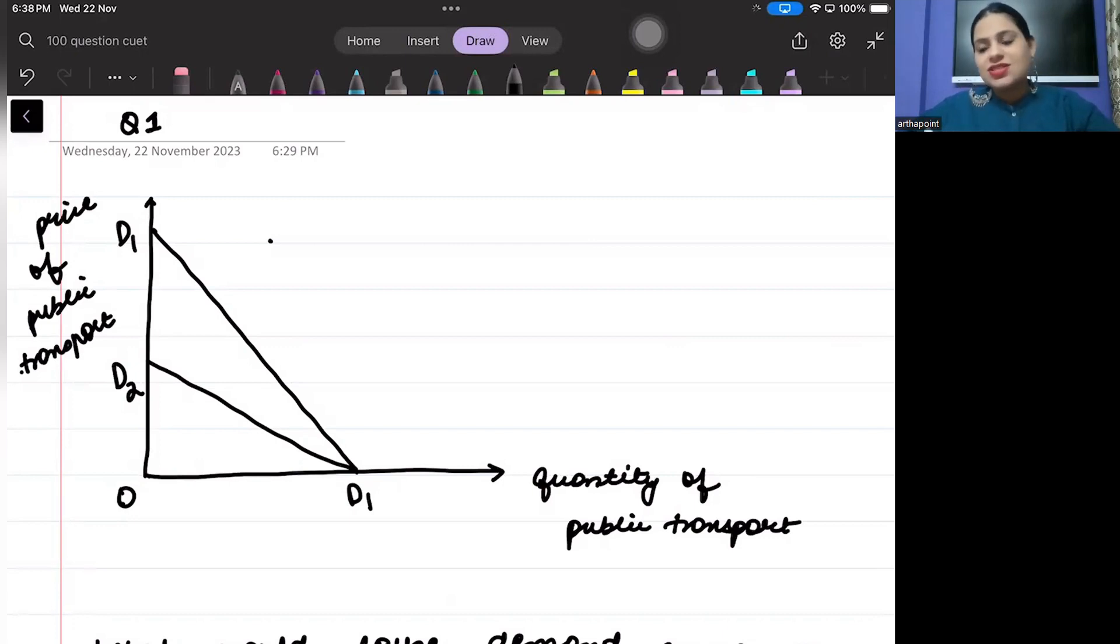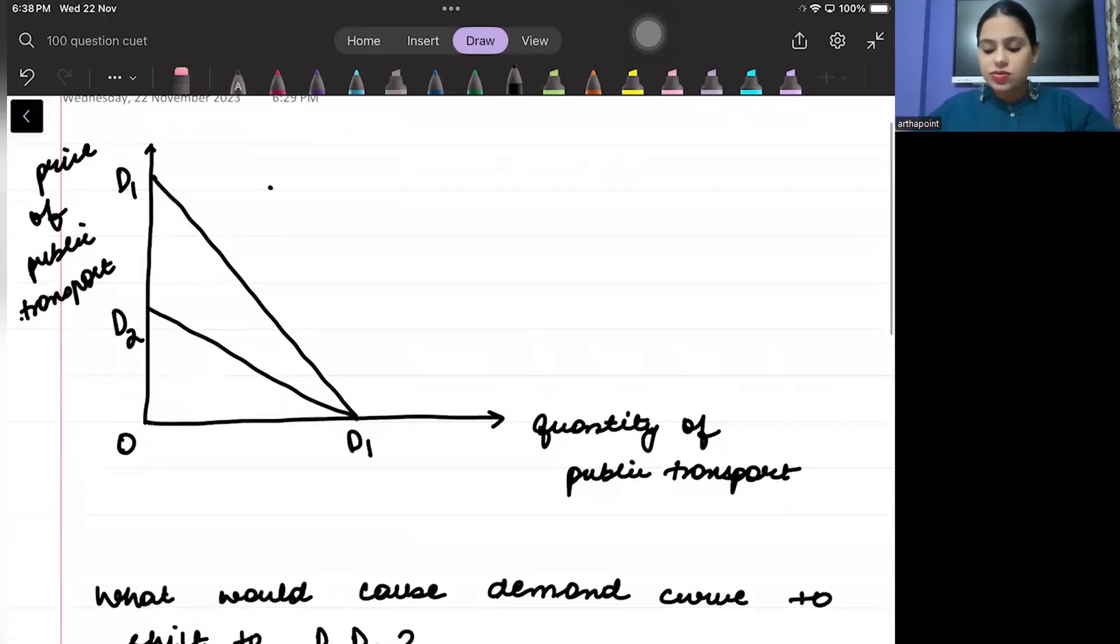Again, beta artha point is the first one to go ahead and start the series. And this is our second season of this series. The first one was done in 2022. And now we are doing it again in 2023. Have a look at the question.